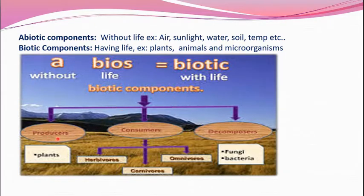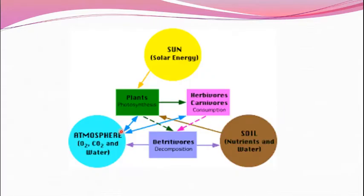The biotic components are classified as producers, consumers, and decomposers. Producers — best example is plants. Decomposers include fungi and bacteria. Consumers can be further classified as herbivores, carnivores, and omnivores based on their food habits. Plants prepare their food in the presence of sunlight, and herbivores are dependent on these plants. Plants and animals are dependent on non-living components, and after death they are decomposed.